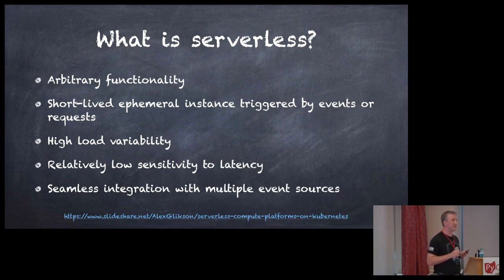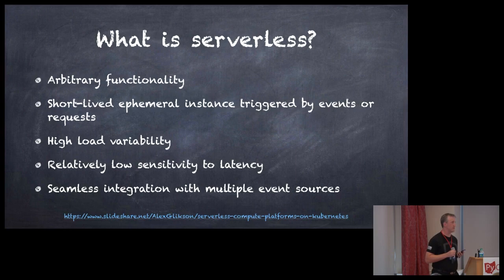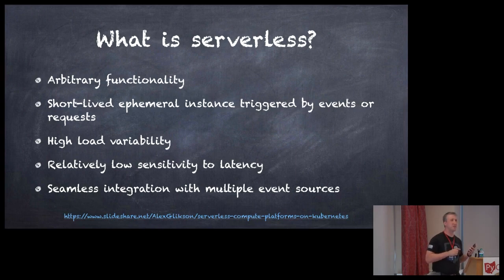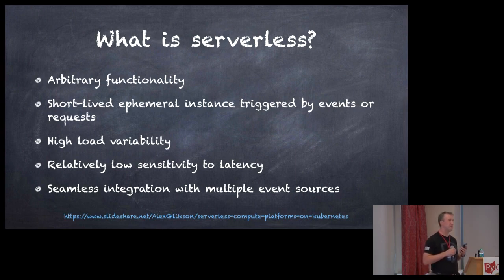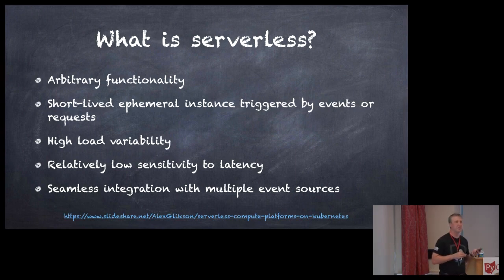High load variability: when you build a proof of concept, it's going to be low load — maybe once a day because somebody finally clicked your link. Once you go to production, it's going to be hundreds or thousands of requests, whatever it is — so this needs to support that. Relatively low sensitivity to latency: whatever application we build needs to be okay with sometimes taking a second longer, because it may need to spin up capacity to process the request. Vast majority of applications accept this variability. Seamless integration with multiple event sources: we need to be able to start it from various places — is it a REST endpoint, is it something for ETL processing? It needs to support multiple ways to start it.